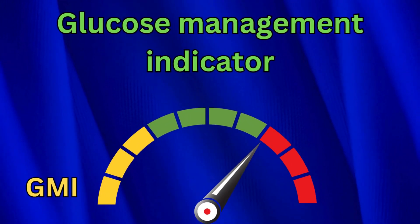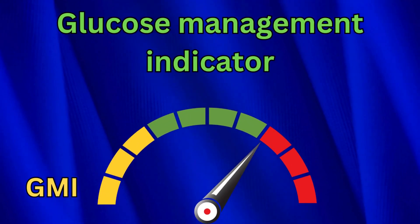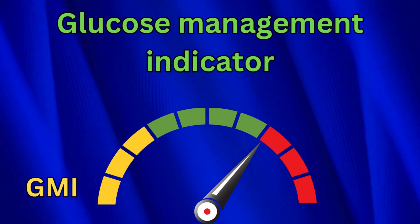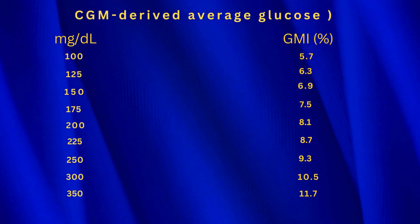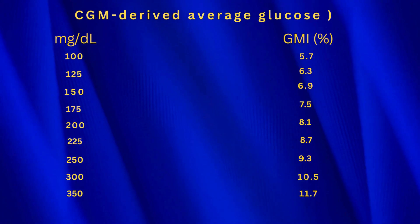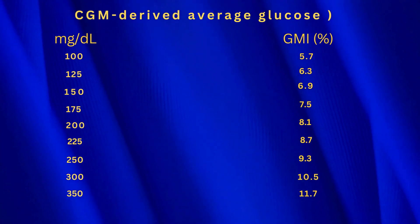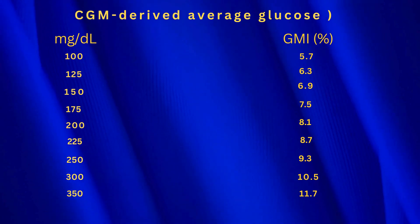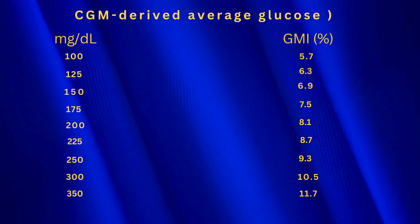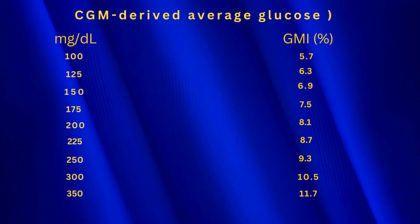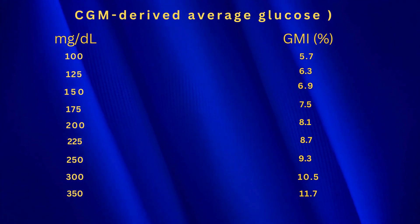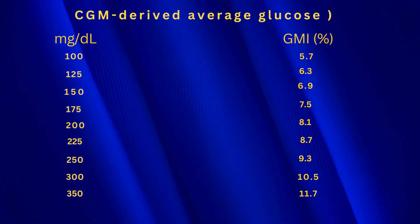GMI stands for glucose management indicator. It is a new way to measure your average glucose levels over the past three months. This is important because it gives you a more accurate picture of your glucose control than a single glucose reading or an A1c test.